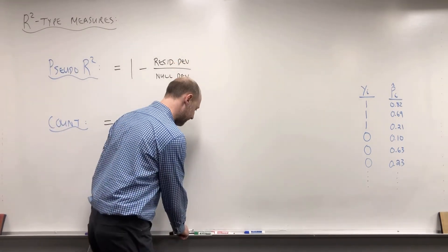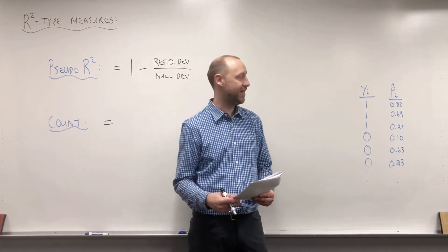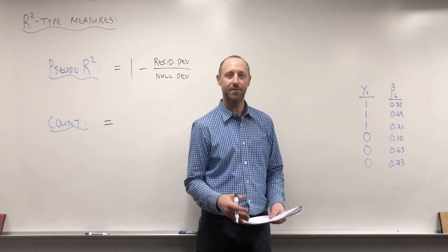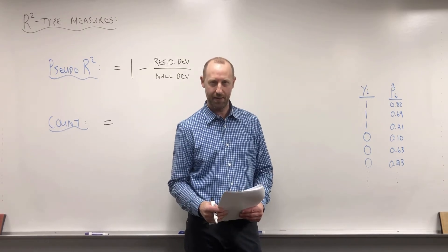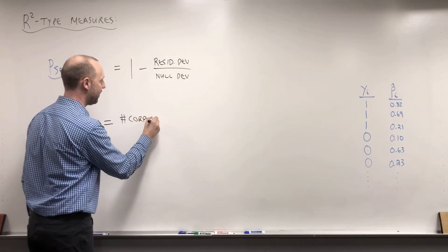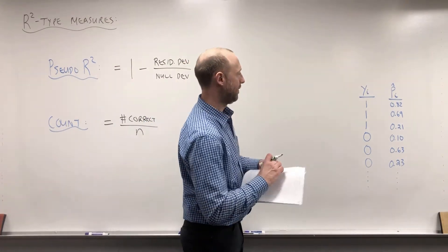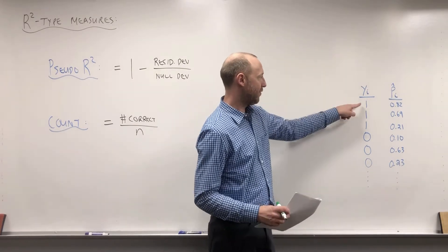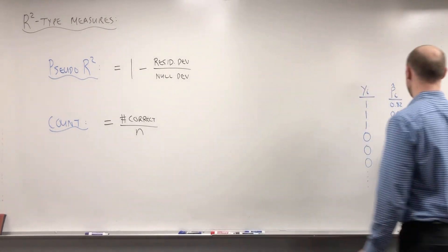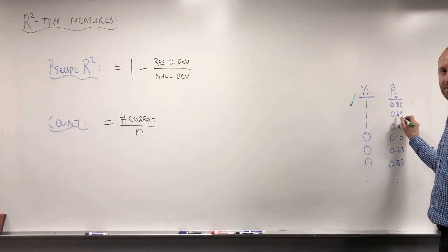The way the Count R-squared works — I'm explaining this because it's a simple one to think about — is you come up with a rule: if there's a greater than 50% chance of the event happening based on our model, we say we think the event is going to happen; if there's less than a 50% chance, we say we don't think it's going to happen. Then the Count R-squared looks at the number of times our model gets it correct divided by the total number of observations.